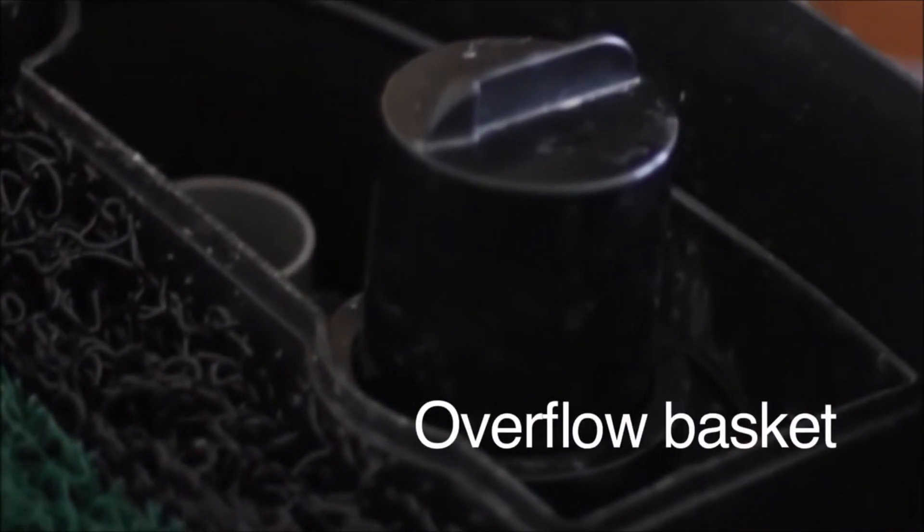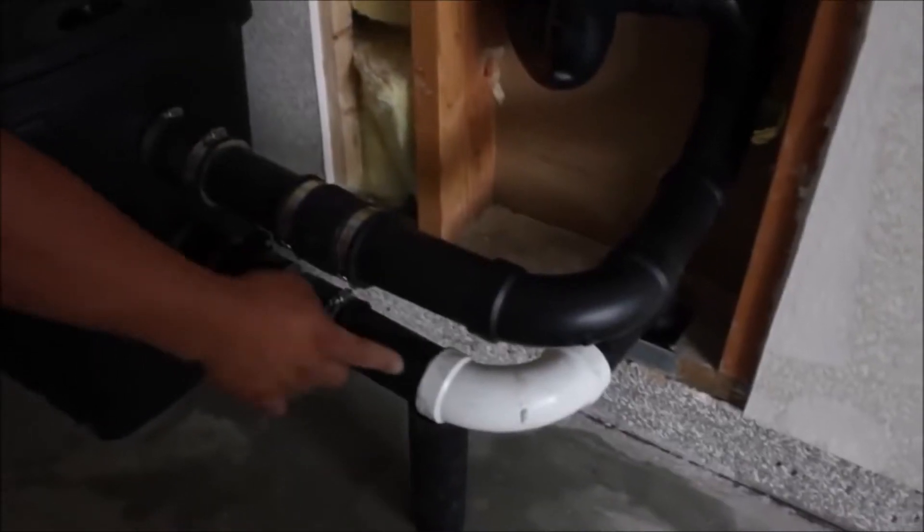The outlet that drains greywater back to the sewer is also connected to an overflow basket in the Aqua2Use. If too much water is coming into the unit, then the greywater will automatically flow back to the sewer.